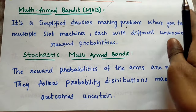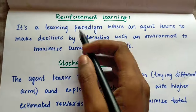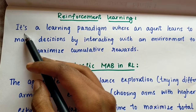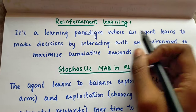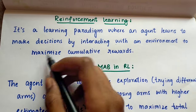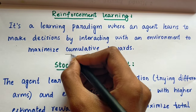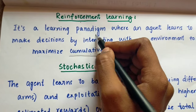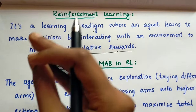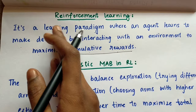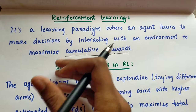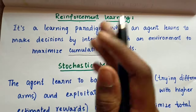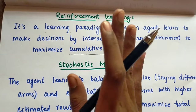Next, what is reinforcement learning in the stochastic multi-armed bandit? It is a learning paradigm where an agent learns to make decisions by interacting with an environment to maximize cumulative rewards. The agent learns to make decisions by interacting with the environment and maximizing these cumulative rewards.